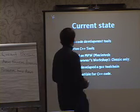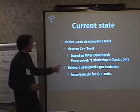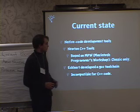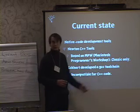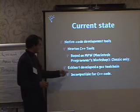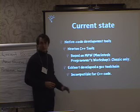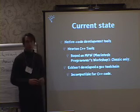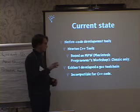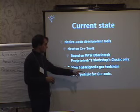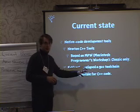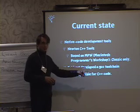For native code development tools, you have the Newton C++ Tools, which are based on MPW — a great development environment, but it only runs in Classic, which nobody uses anymore except Newton developers. There is also a GCC toolchain that is more or less compatible, but it has problems with C++ due to the Application Binary Interface, or ABI, which differs between Newton OS 2.0 and Newton OS 2.1.